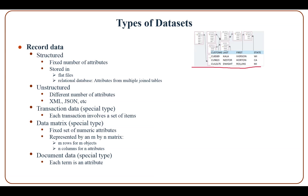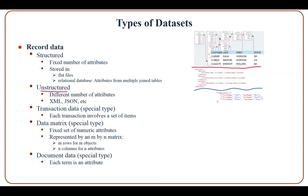With unstructured record data, a record contains a different number of attributes and can be in the format of XML or JSON data.